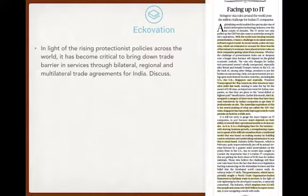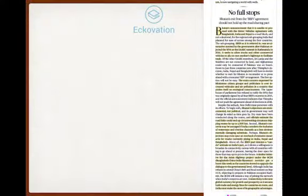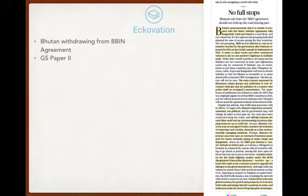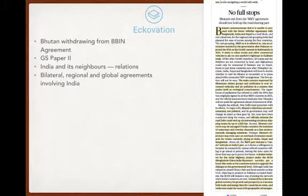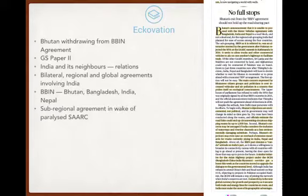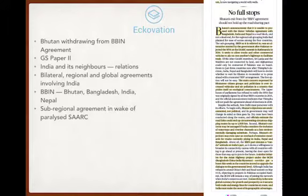The next article is in the context of Bhutan withdrawing from the BBIN agreement. It is relevant to GS Paper 2 under India and its neighbors' relations, and also bilateral, regional, and global agreements involving India. BBIN is a connectivity agreement involving Bhutan, Bangladesh, India, and Nepal. It is a sub-regional agreement within SAARC, a regional entity of South Asia.